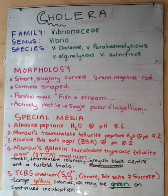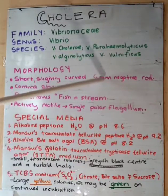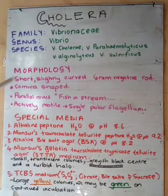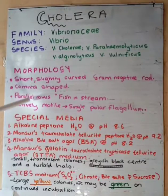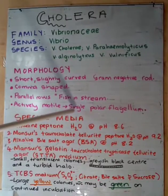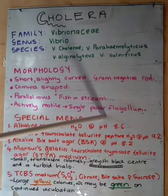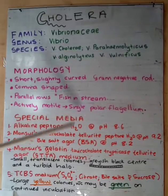Looking at the morphology, cholera bacteria are short, slightly curved, gram-negative rods — comma-shaped. In mucus, they appear as parallel rows, which can be described like fish in a stream. They are actively motile because they have a single polar flagellum.